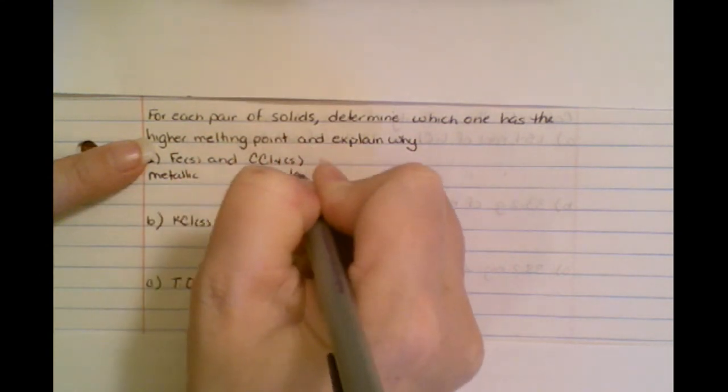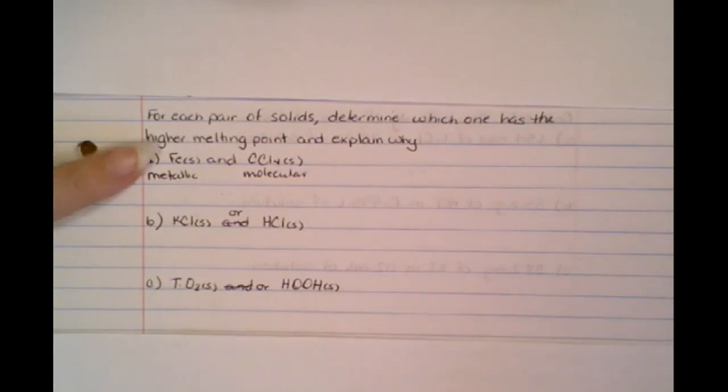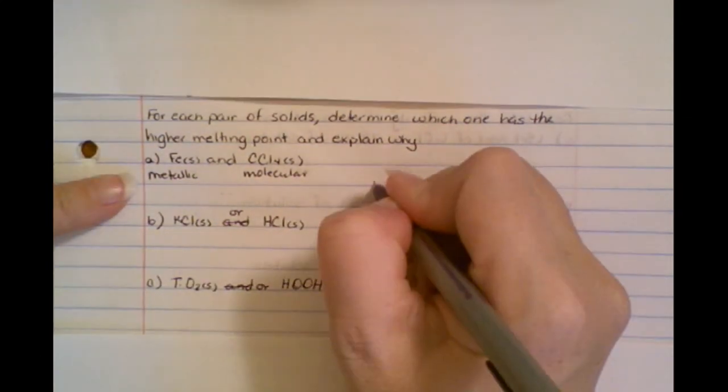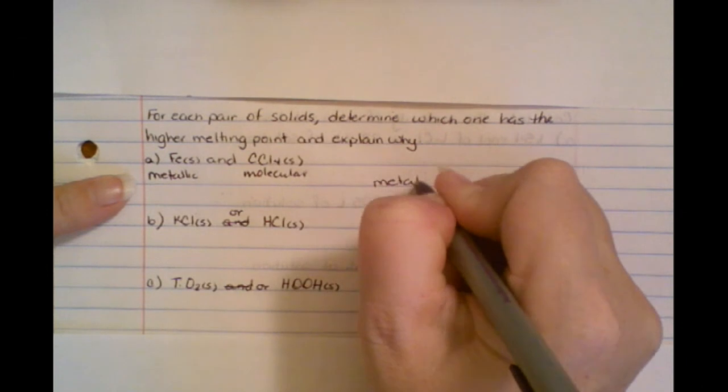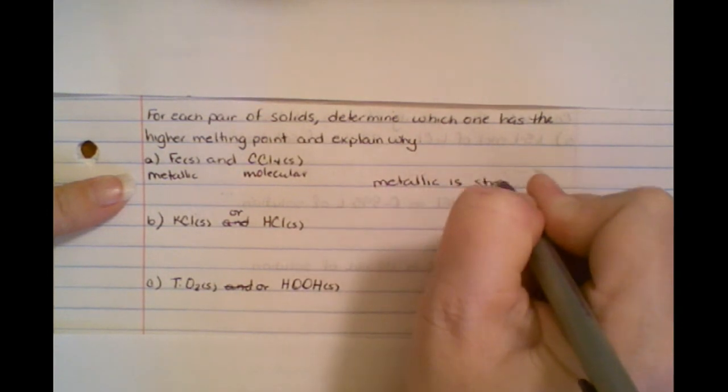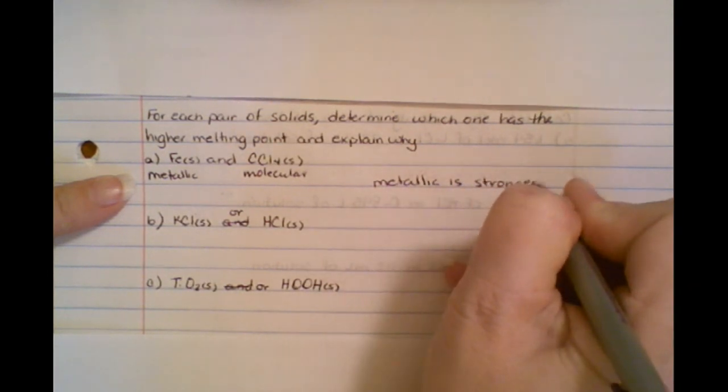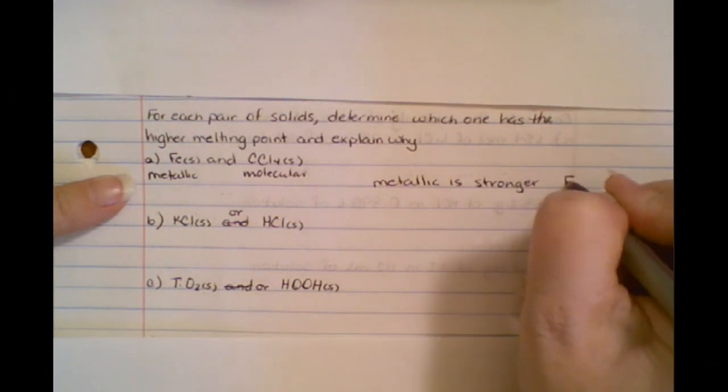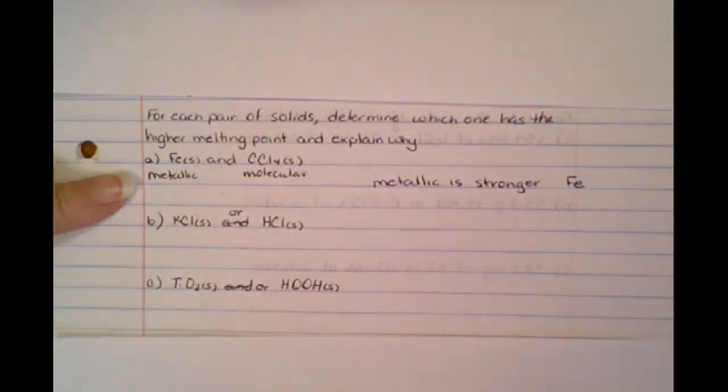Now the question is, which of these is a stronger bond? Well, the metallic bond is a stronger bond. So metallic is stronger. So that means that if the metallic is stronger, then the iron is going to have the higher melting point.